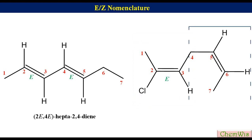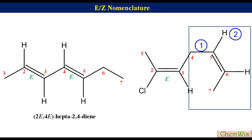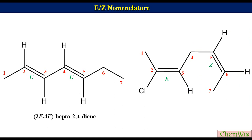Similarly for the C5-C6 double bond: on C5 the priority of the allyl residue is 1 and that of H is 2. Since higher priority groups are on the same side of the alkene, the configuration of this alkene is Z. So the name of this compound is (2E,5Z)-2-chloro-hepta-2,5-diene.